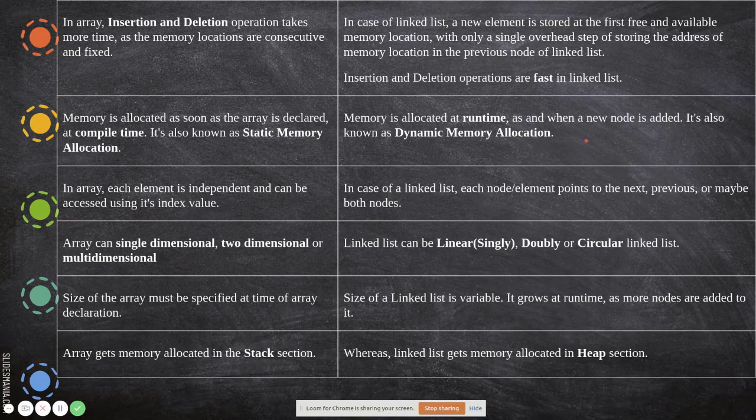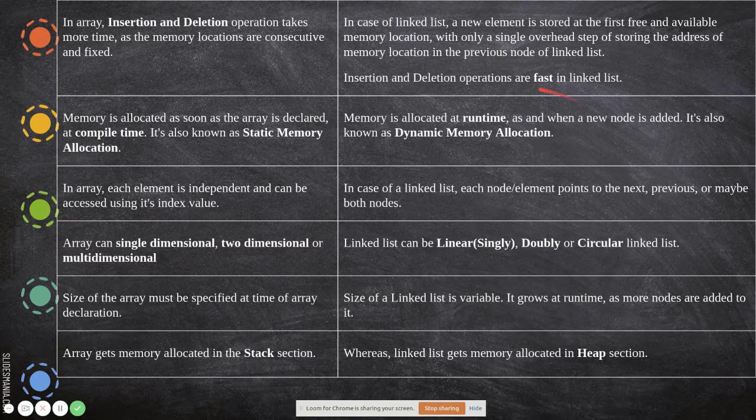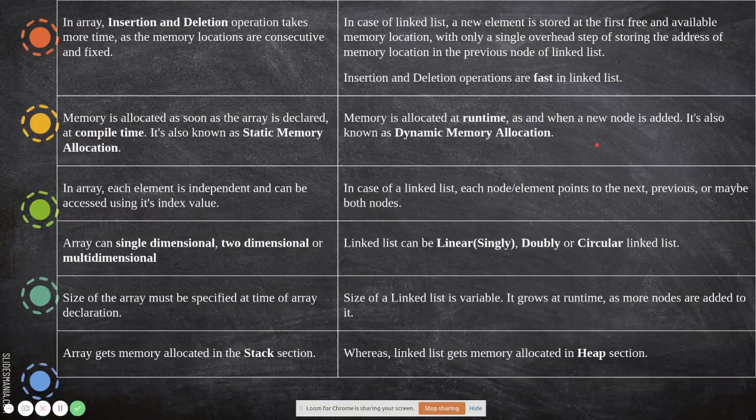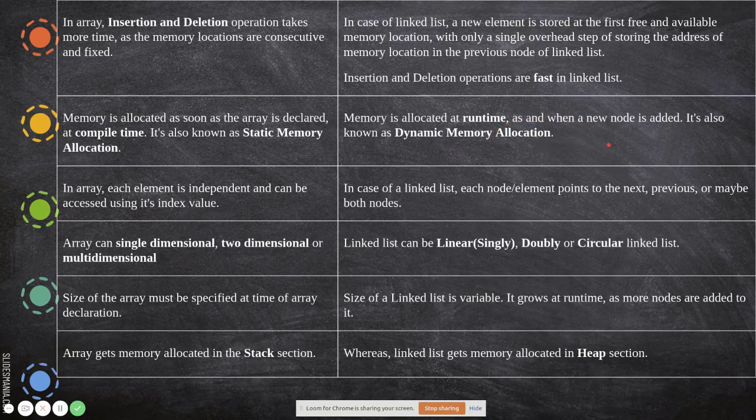Whereas here, there is no restriction. There is no need for you to declare while declaration itself. You have to give the number of data which you can store in array, but you can keep on increasing the new node and add it by using its pointers. So memory is allocated at runtime during execution time. You can create more nodes and it can be added, so it is called dynamic memory allocation.